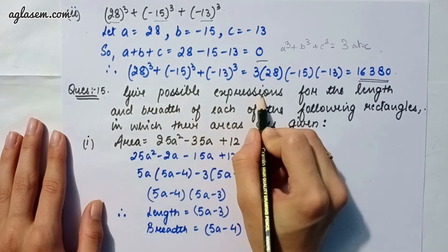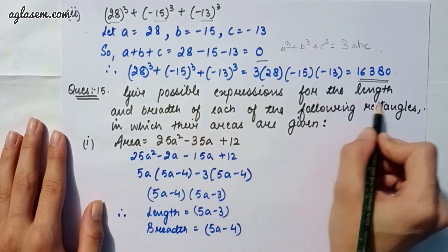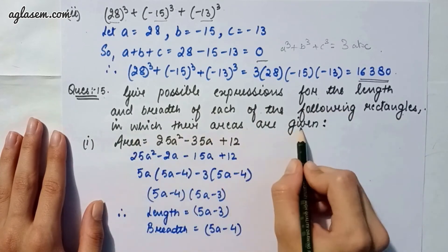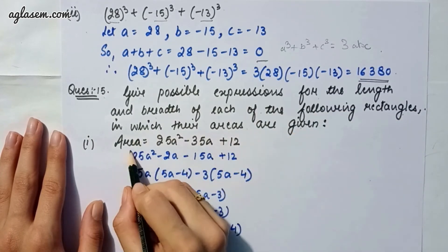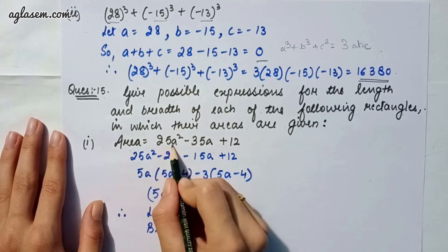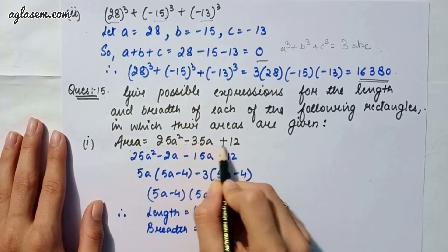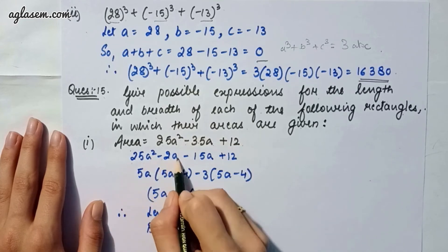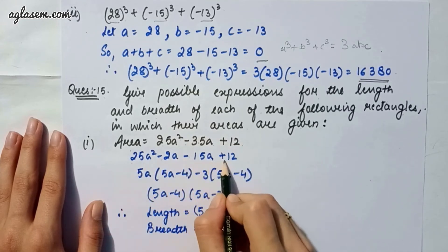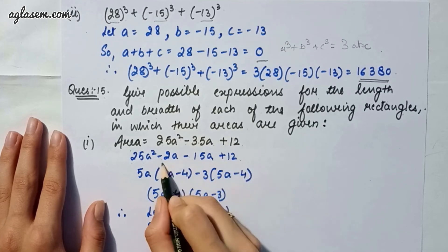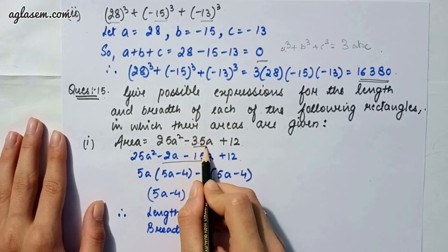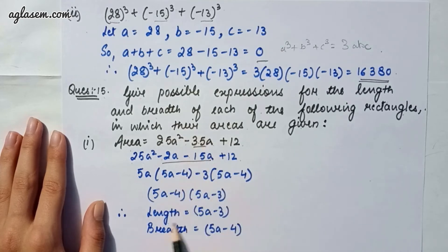Question 15: Give possible expressions for the length and breadth of rectangles whose areas are given. Part one: area = 25a² - 35a + 12. We split -35a as -15a - 20a, giving 25a² - 15a - 20a + 12. Solving, length = 5a - 3 and breadth = 5a - 4.